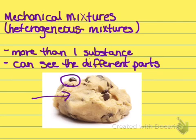Mechanical mixtures are also called heterogeneous mixtures. They're made up of more than one substance, and you can see the different parts that make up that substance. Cookie dough, for example, is a heterogeneous mixture because you can see both parts — the dough and the chocolate chips.